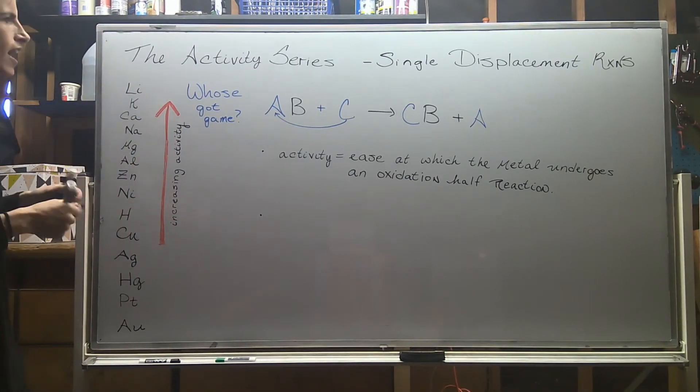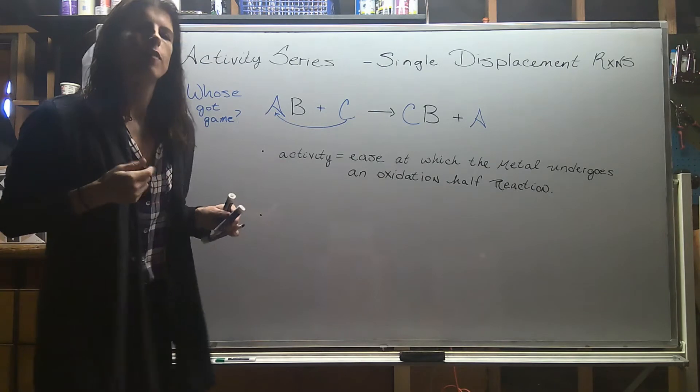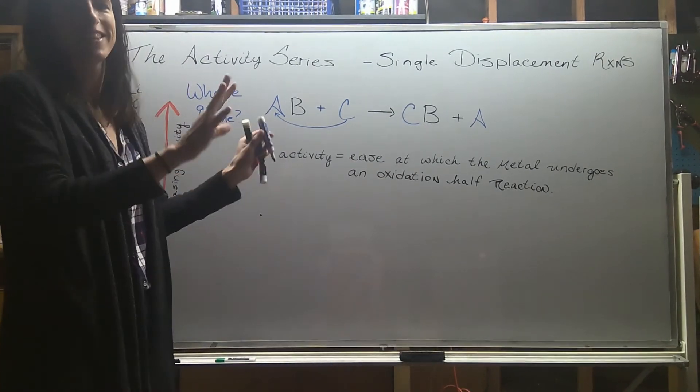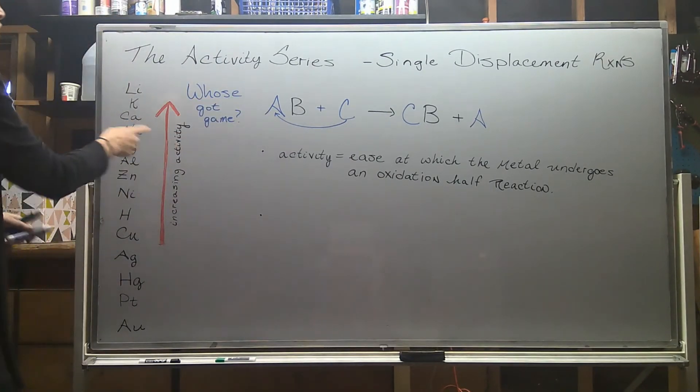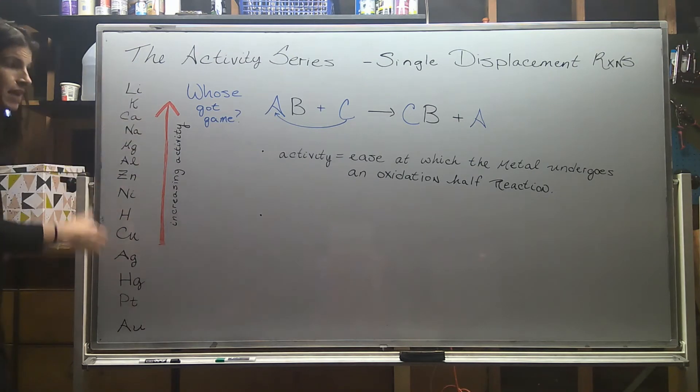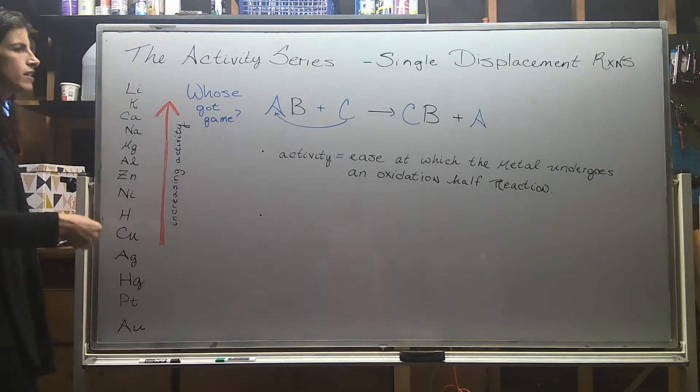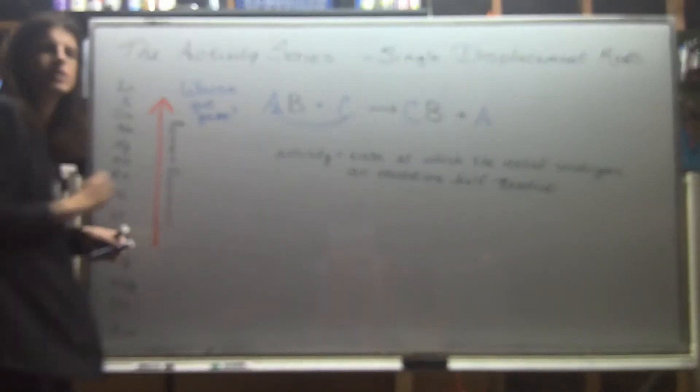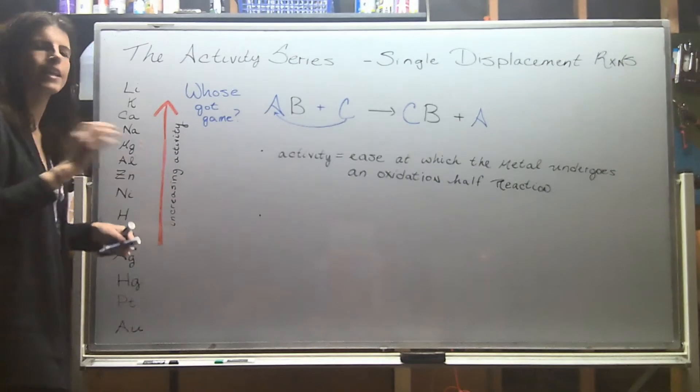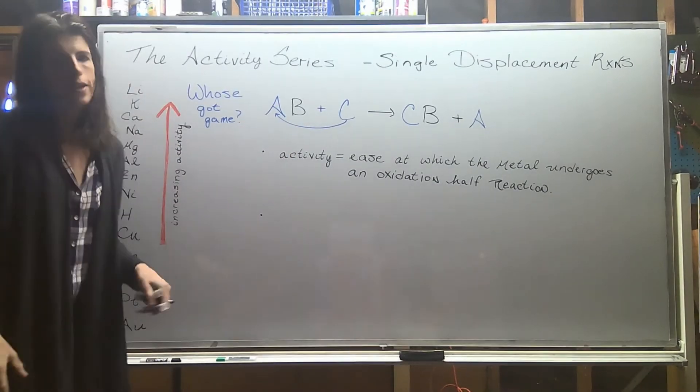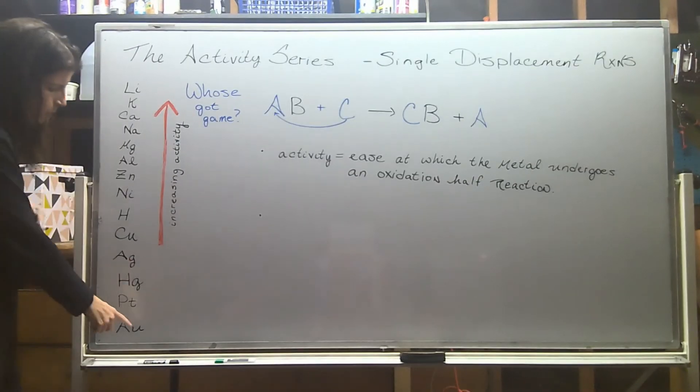So who has enough appeal to do what C just did? Because not every person can come in and be like, hey, I get what I want, right? So this is a table of who's got game. So lithium and potassium, they can always come in because they're at the top, and they can do what C just did. They can come in and break up, destroy couples.